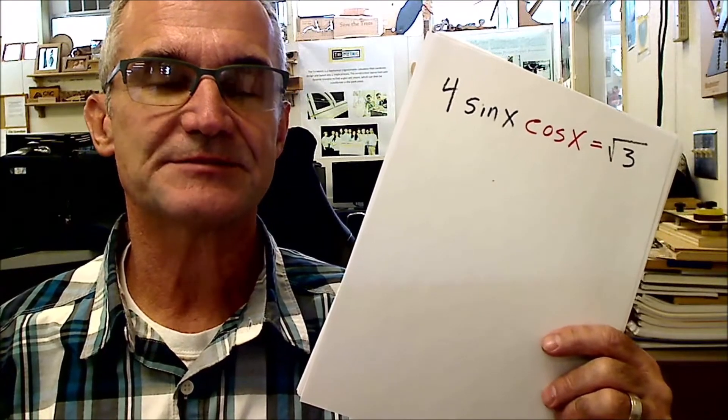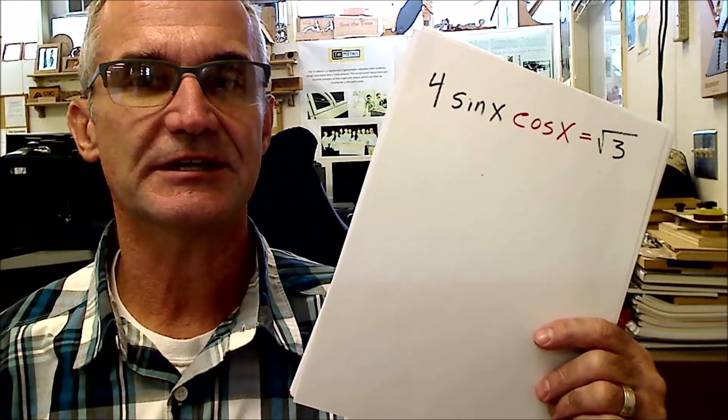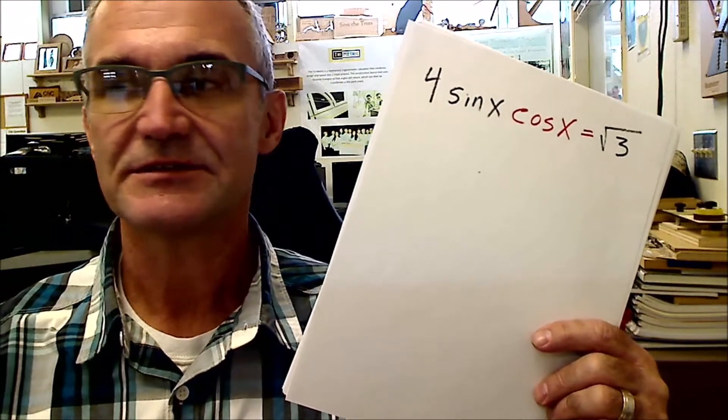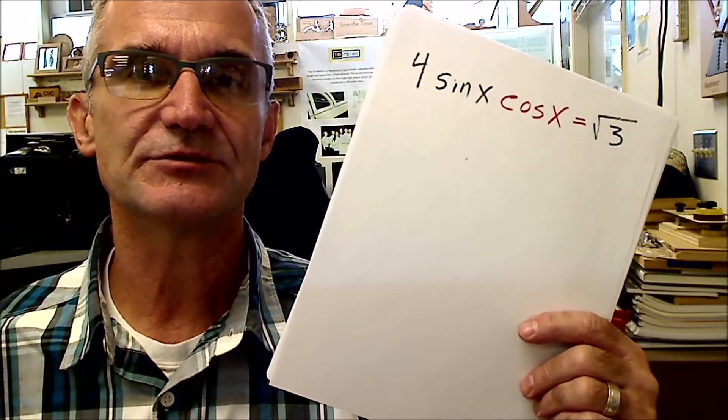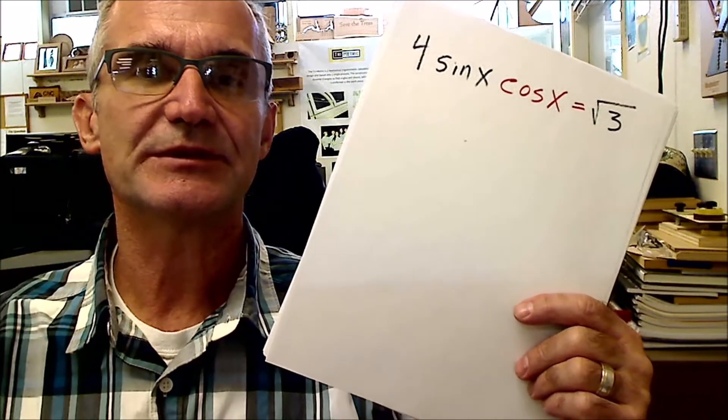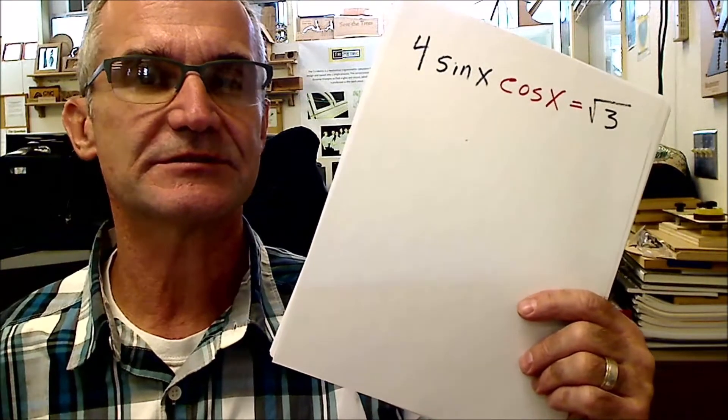Hey problem solvers, Colfax Math here. Today we're going to look at a trig identity problem: 4 sine of x cosine of x equals root 3. You have to use a double angle identity to solve that. Let me put the camera over my shoulder and we'll get started.